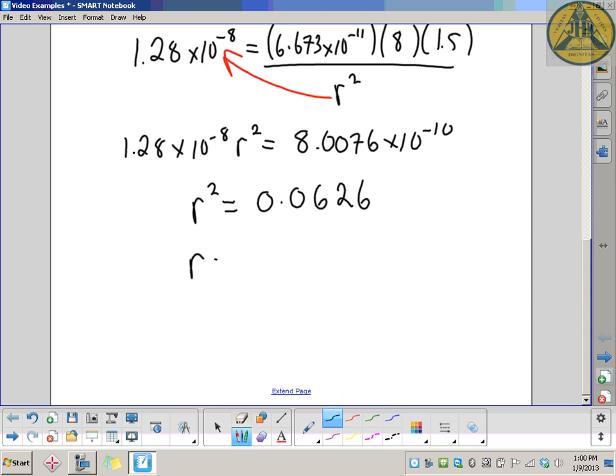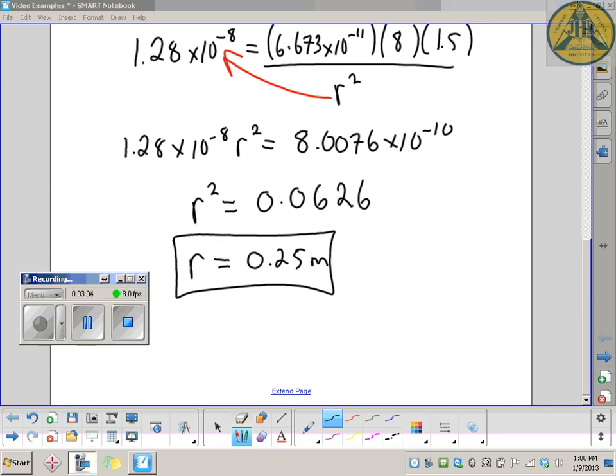Keep all the digits in your calculator for when you do the square root. So r equals the square root of that, which is 0.25 meters. The center of masses between these two objects are about 25 centimeters apart.